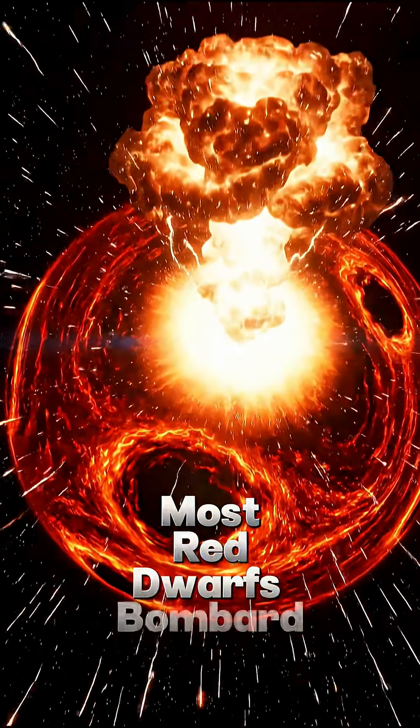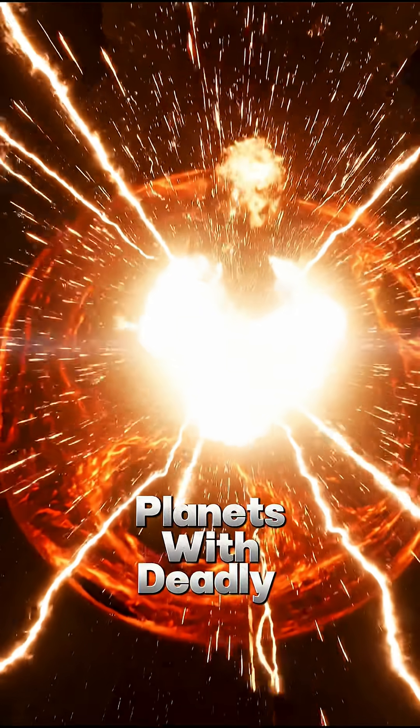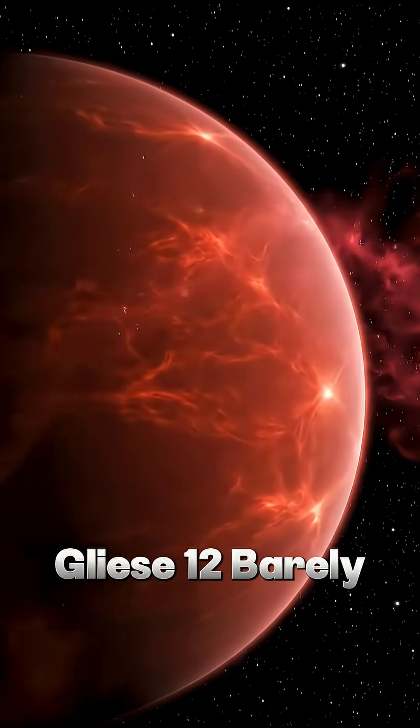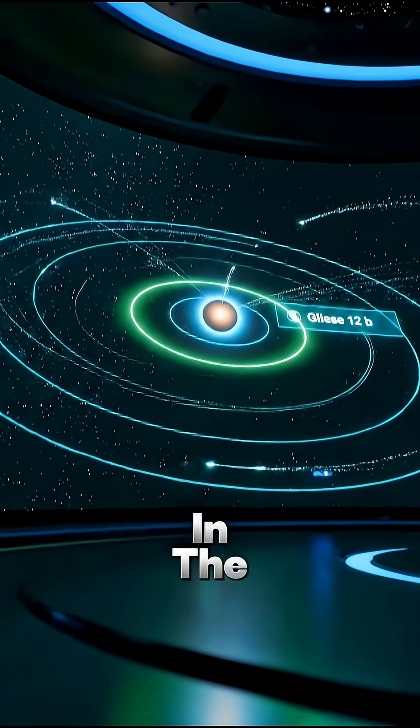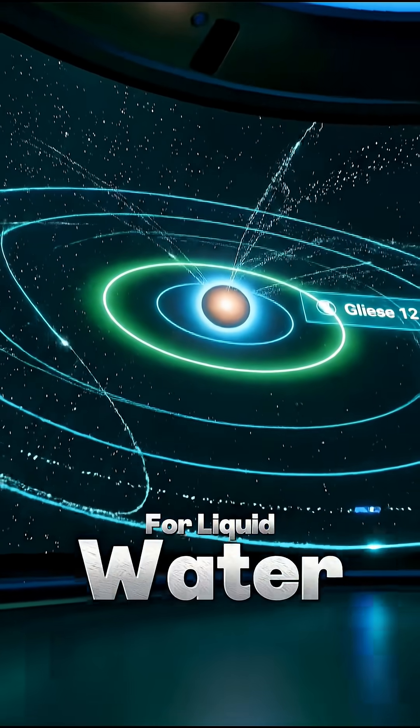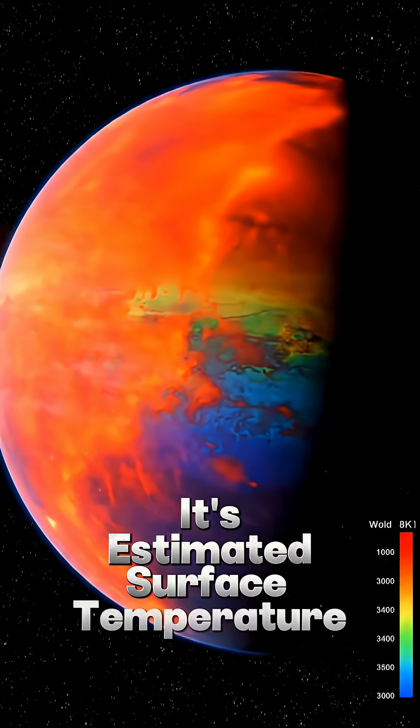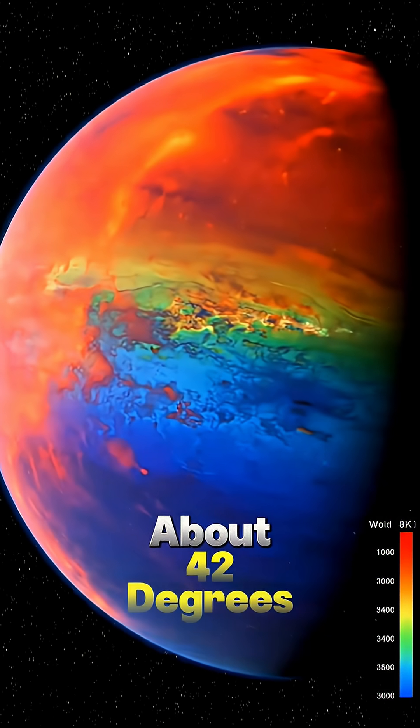Most red dwarfs bombard planets with deadly radiation, but Gliese 12 barely flares at all. And the planet sits in the perfect zone for liquid water. Its estimated surface temperature? About 42 degrees Celsius.